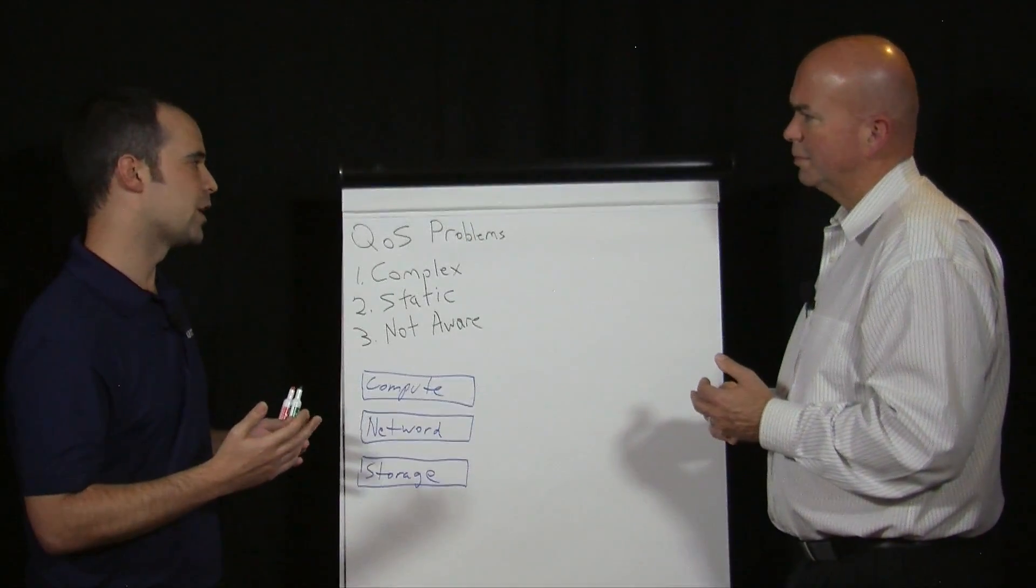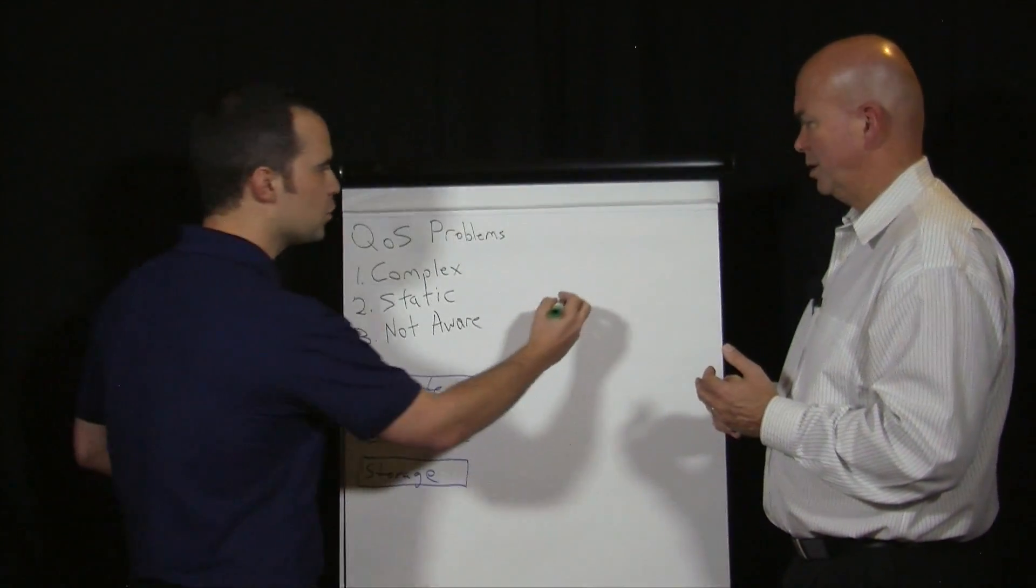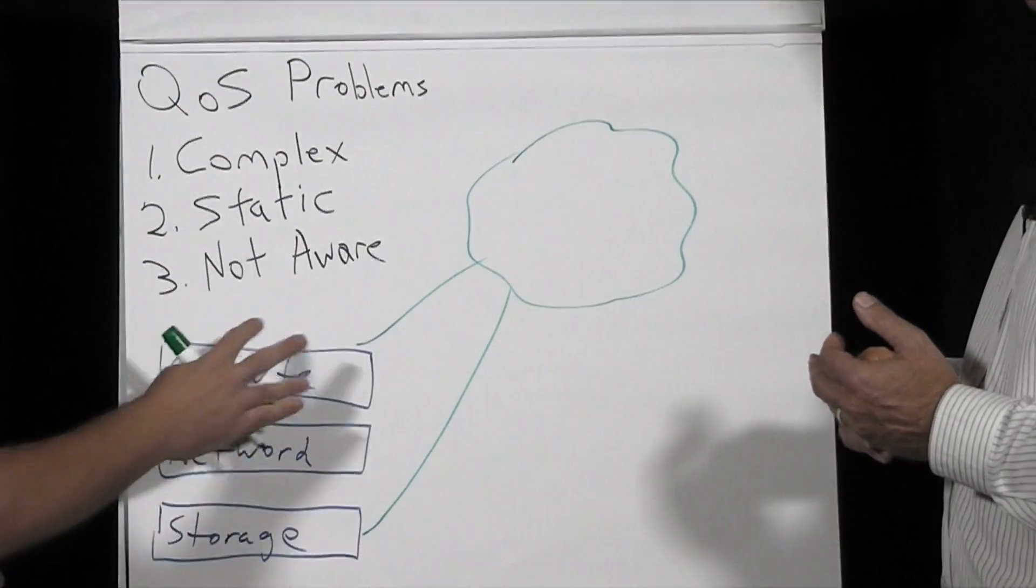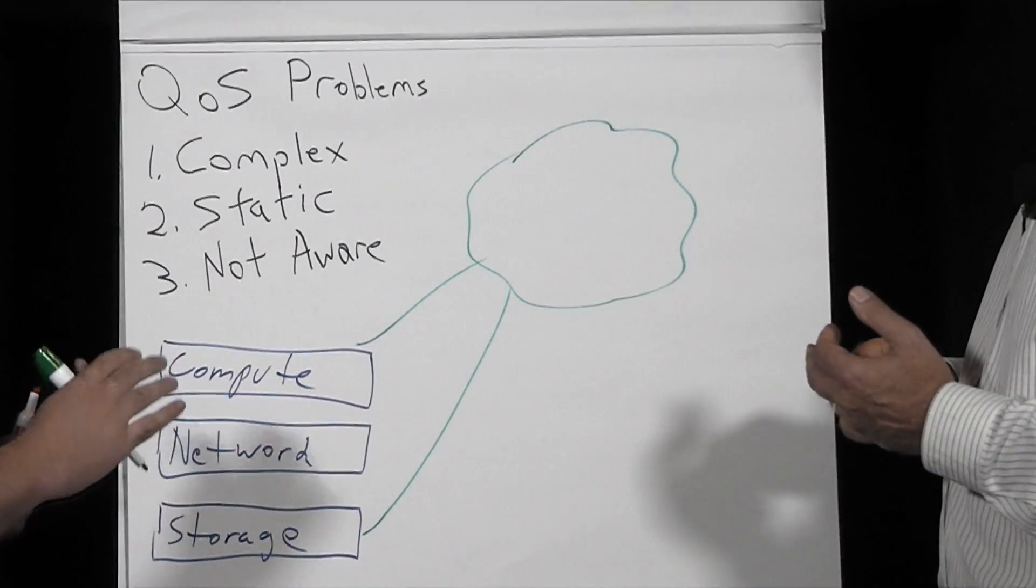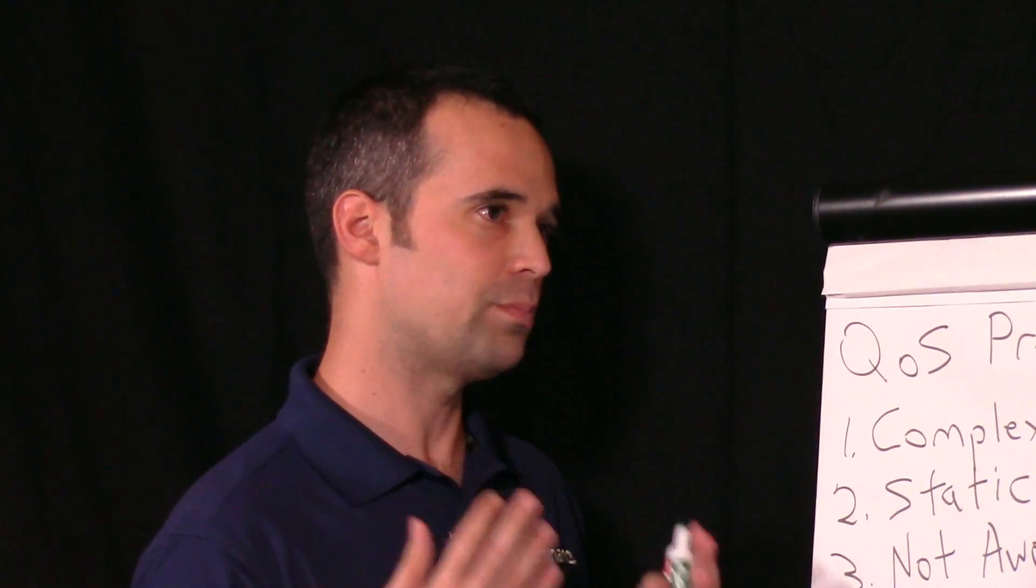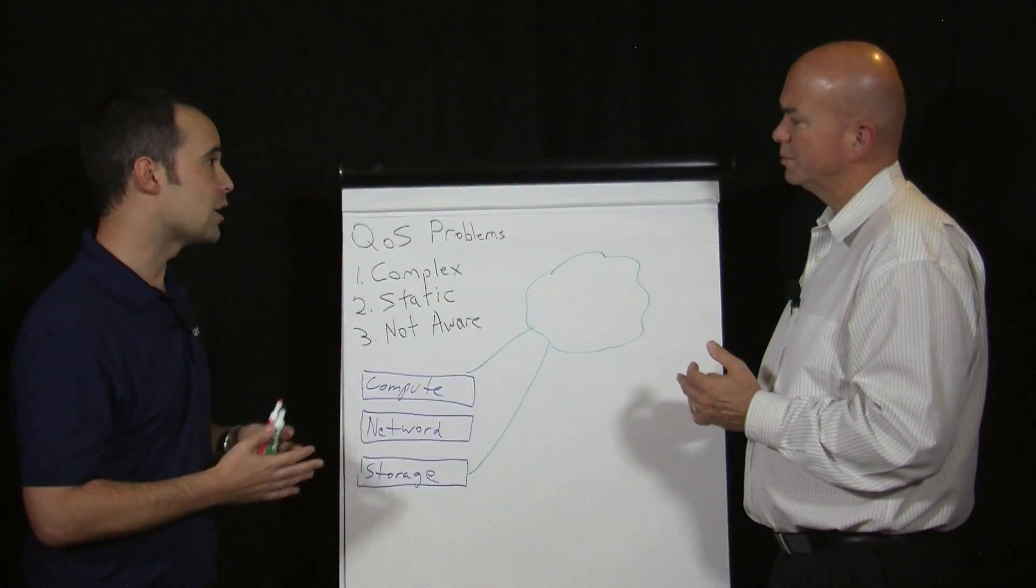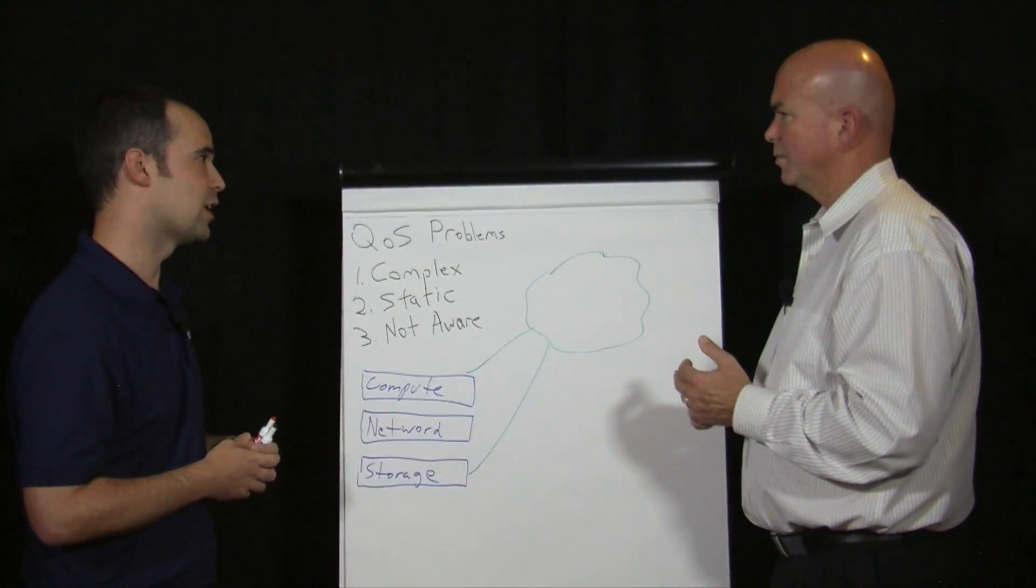So what we're trying to do at Kaminario is to take that insight from the storage and compute. And what we do, we send from the compute and from the storage, and also from the network, but let's focus on the compute and storage for now, and we send those data points to a cloud-based analytics platform that utilizes Elasticsearch, utilizes big data analytics, to create what we came up with, prescriptive analytics. What does that mean? Those are insightful recommendations for our customers to act, to do things that will increase their productivity of their environment.